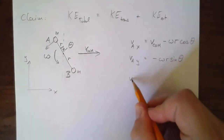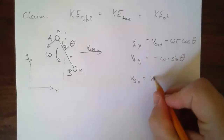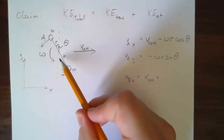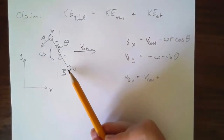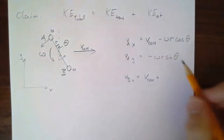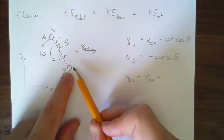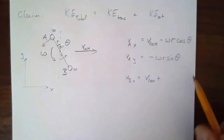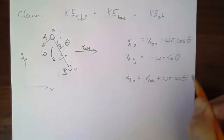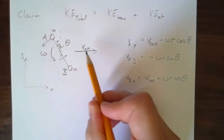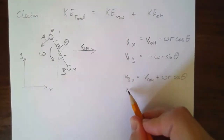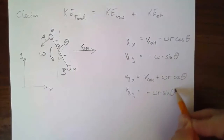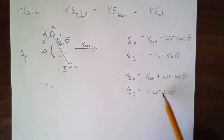Similarly for mass b: v_bx equals the overall velocity v_cm plus omega·r·cosθ, because the rotation adds to the rightward motion for this mass. And v_by is omega·r·sinθ — the y-component of the tangential velocity in the other direction. You should double-check that the sine and cosine components come out in the right places.